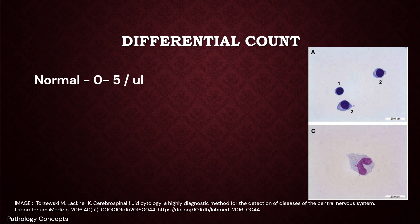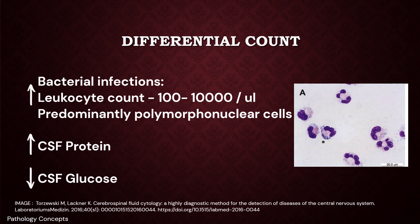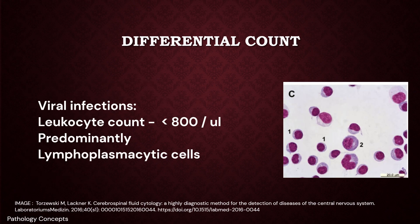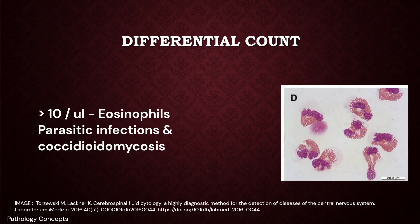A CSF leukocyte count of 0 to 5 cells per microliter is normal and excludes CNS infection. Acute bacterial infections typically show leukocyte counts of 100 to 10,000 cells per microliter with predominant polymorphonuclear cells, increased CSF protein, and decreased CSF glucose. In contrast, viral meningitis shows WBC counts less than 800 per microliter with lymphocytic predominance and slightly decreased or normal glucose. More than 10 eosinophils per microliter is seen in parasitic infections and coccidioidomycosis.